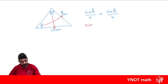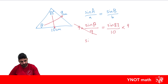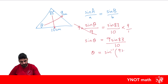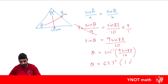Always start with the one you don't know. Sine theta over 9 equals sine 83 over 10. Multiply both sides by 9 — the 9s cancel — leaving sine theta equals 9 sine 83 over 10. Then to find theta, we take the inverse sine of the right-hand side: inverse sine of (9 sine 83 over 10), which gives us 63.3 degrees to one decimal place.